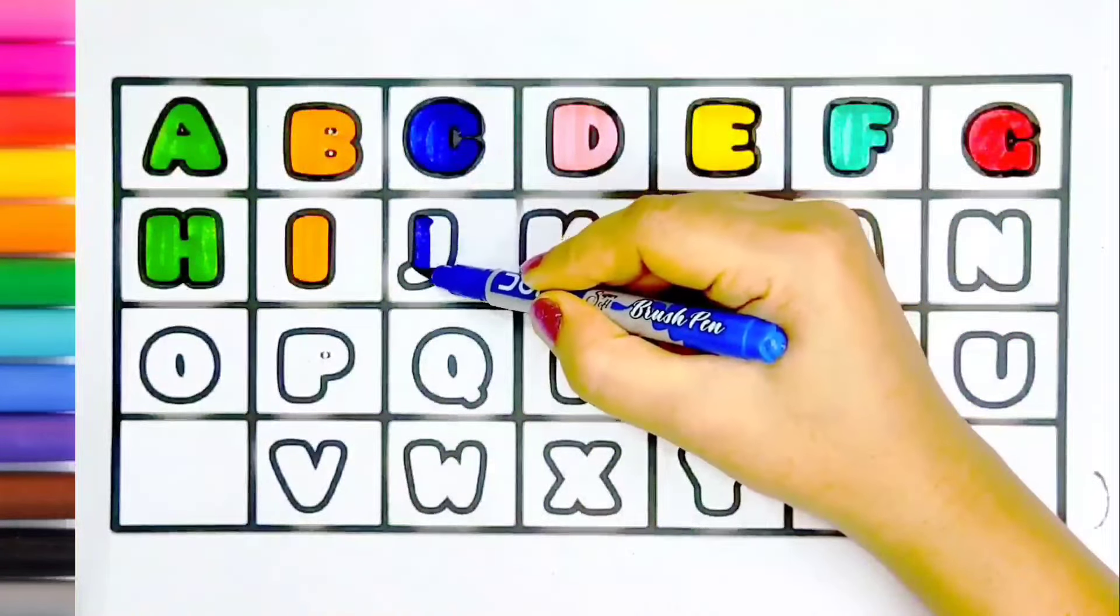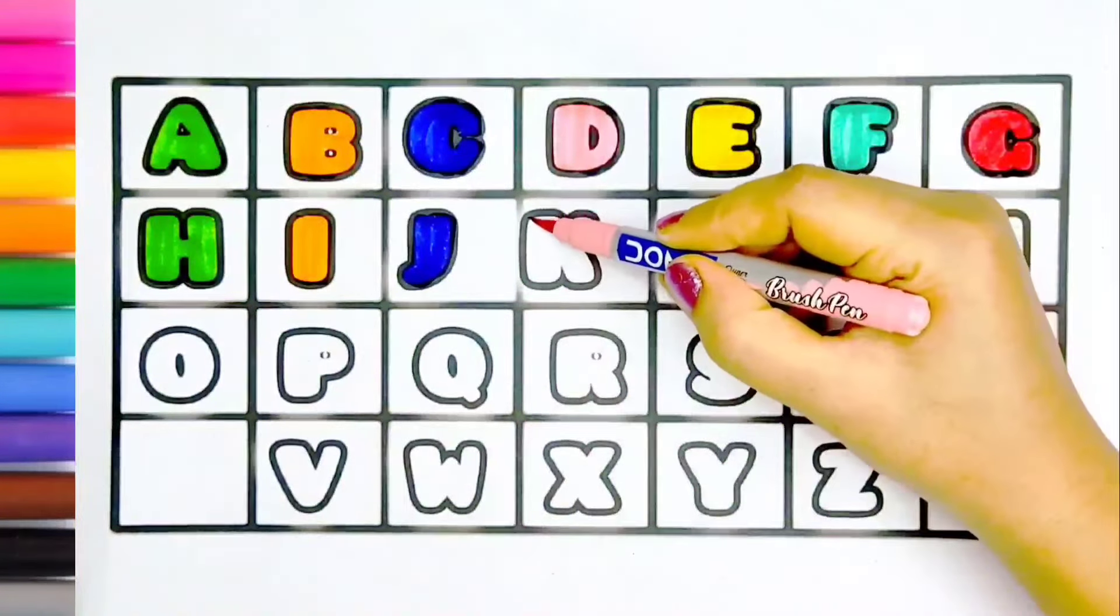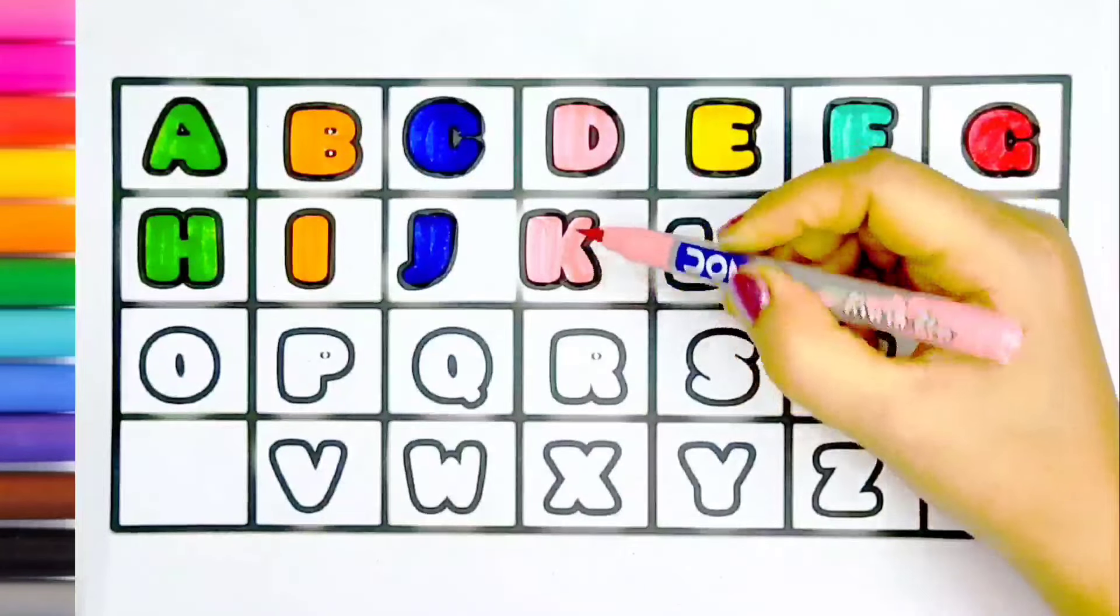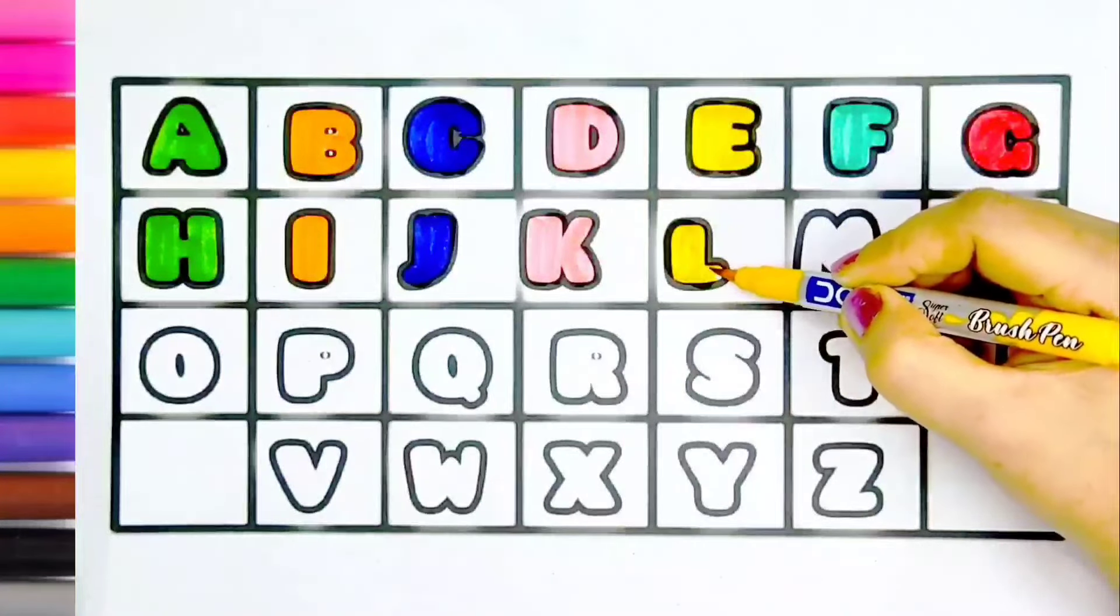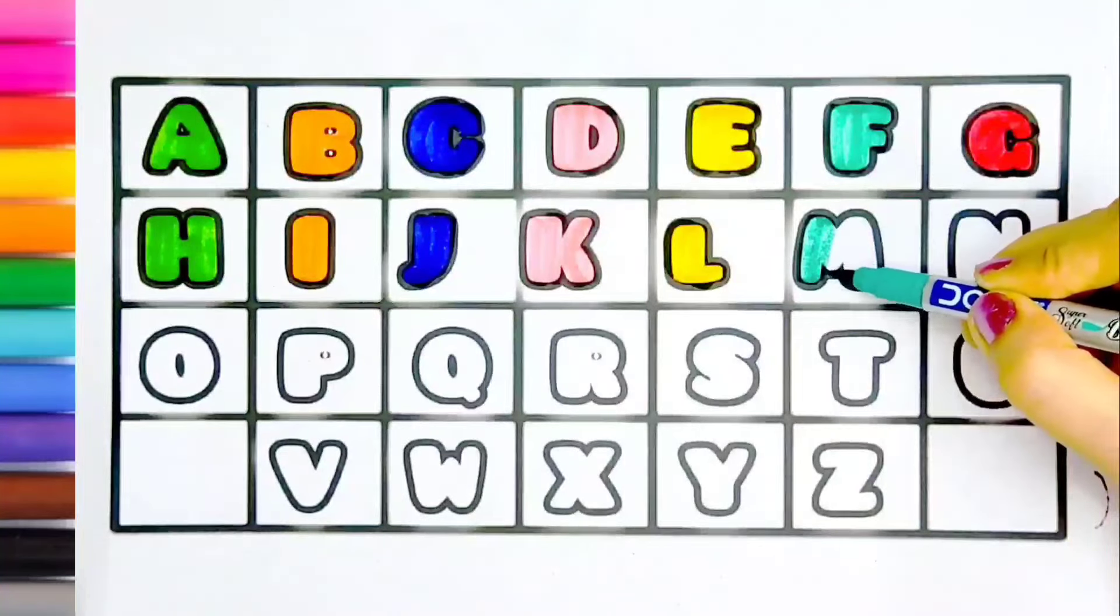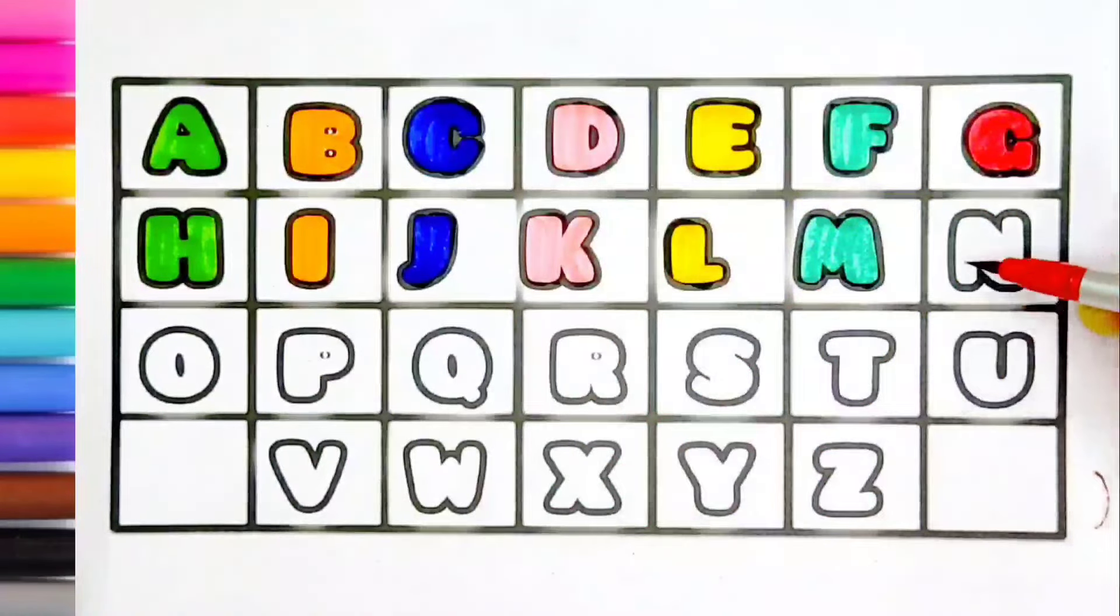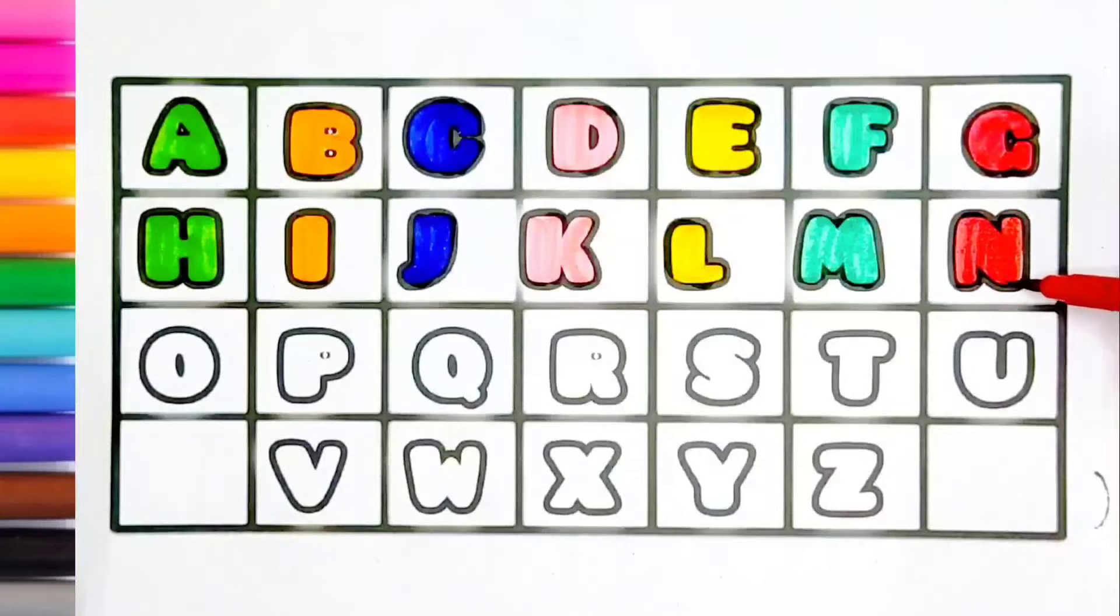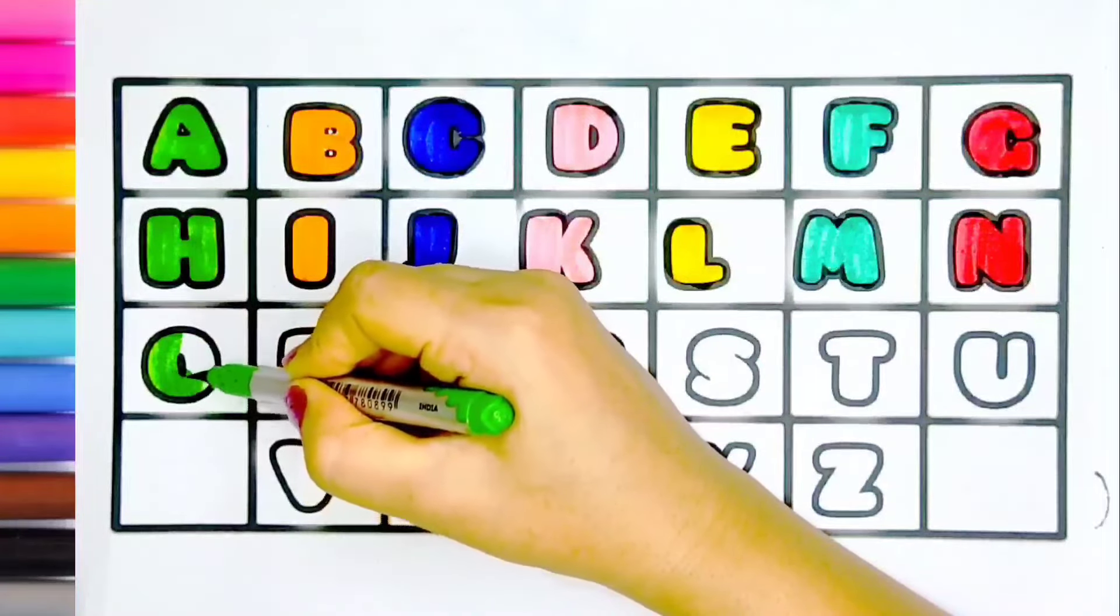Blue color, J, J for jug. Pink color, K, K for kangaroo. Yellow color, L, L for lamp. The green color, M, M for mango. Red color, N, N for no. Light green color, O, O for orange.